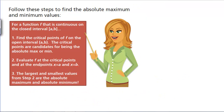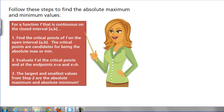You can always find absolute maximums and minimums if you have a continuous function on a closed interval by finding all the critical points, evaluating the function at the critical points and the endpoints, and taking the largest and smallest Y values as your absolute maximum and absolute minimum.